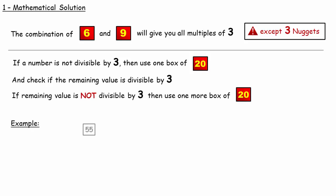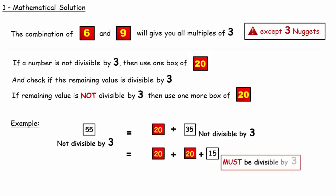For example, 55 is not divisible by 3. So use one box of 20. Remaining number is 35 which again is not divisible by 3. So use another box of 20. This time the remaining number must be divisible by 3.